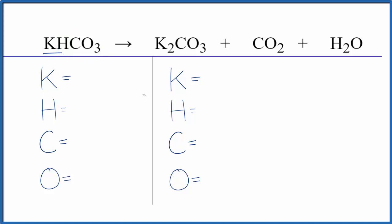So, the first thing we'll do to balance the equation, count the atoms up. We need to be careful here. For the reactants, we have one potassium, one hydrogen, one carbon, and three oxygens.